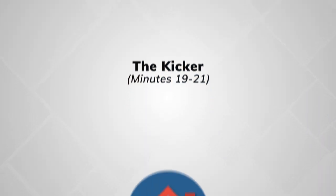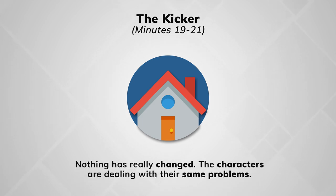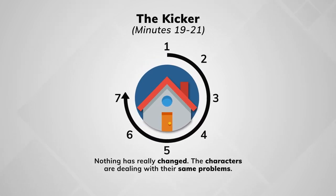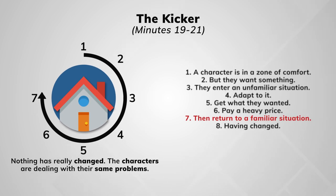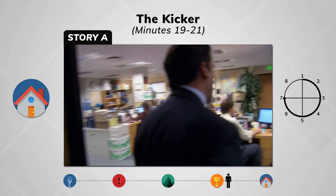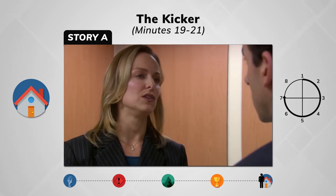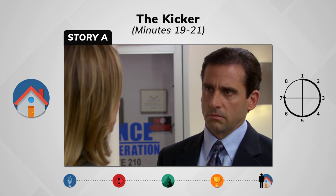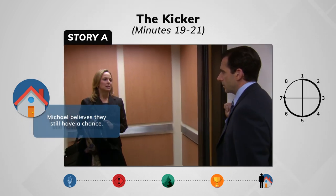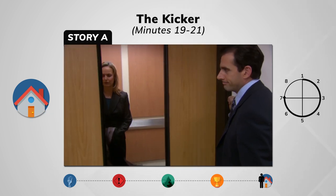At minutes 19 through 21, Charney gives us the kicker. This is where we see how nothing has really changed in this world — the characters are dealing with their same problems and are in their regular world. In the story circle, this is point 7, where the characters return to their familiar situation. Point 8 on the circle is change, however in a sitcom the change will be minimal because the genre is built upon stories that take place in single episodes. In The Office episode, Jan storms out of the office and tells Michael off, but Michael only really receives one piece of her rant — that his looks have nothing to do with it — and he's satisfied. We return to a familiar situation.